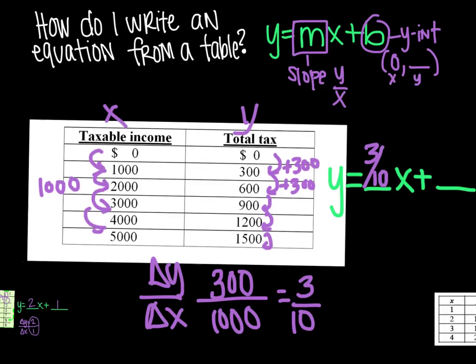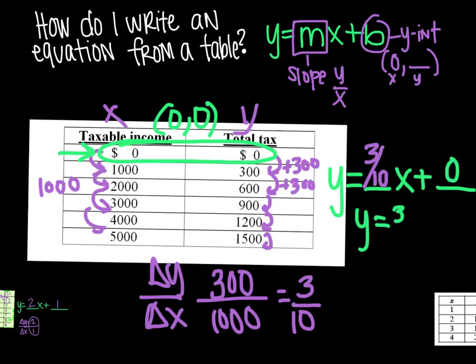Then you want to find when x is 0. So you go look at your table. X is 0 right here. So here's your coordinate that you're going to use. And in this case, it's 0, 0. So you could say plus 0. You could also just say y equals 3 tenths x. Either way, there's your answer.